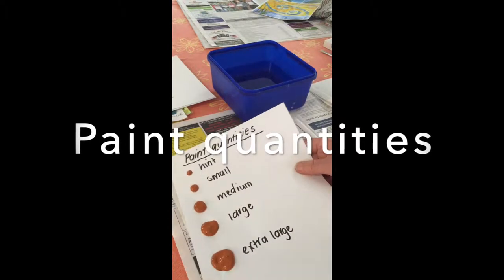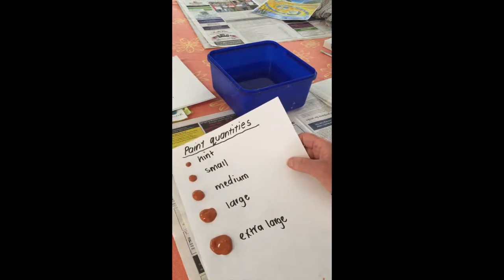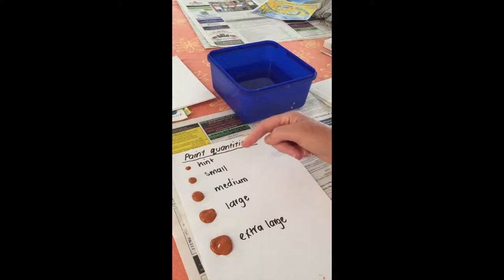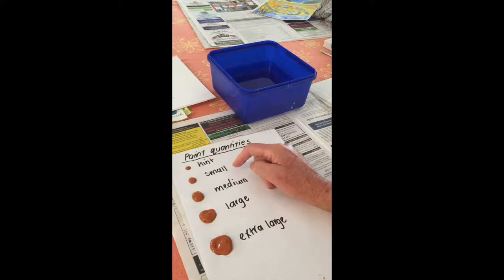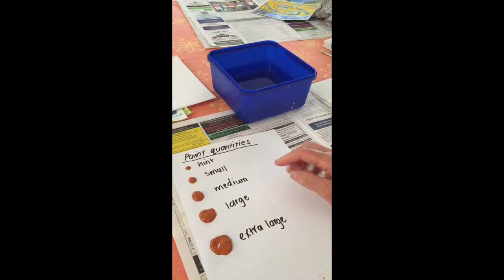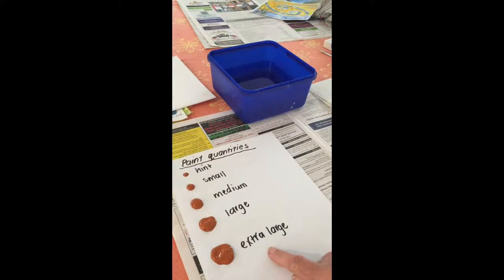Understanding how much paint is required when you're mixing colors: when we talk about a hint, it's a very small amount, sort of like a two to three millimeter diameter. A small amount is five to eight millimeter diameter. Medium is about a centimeter.